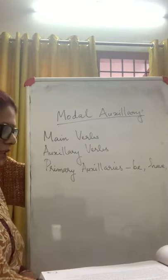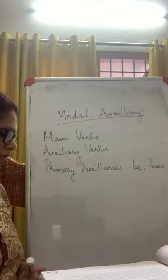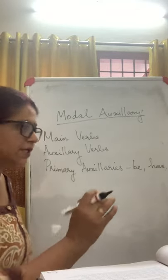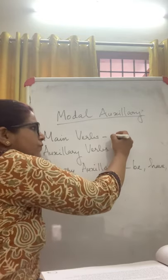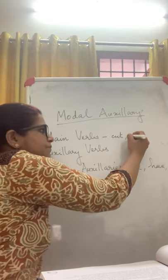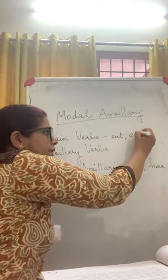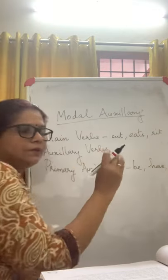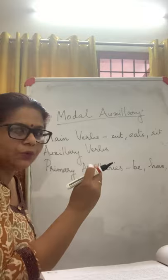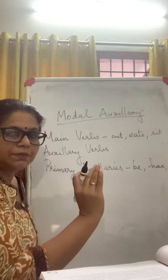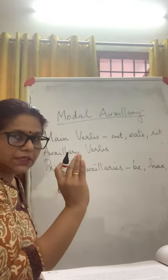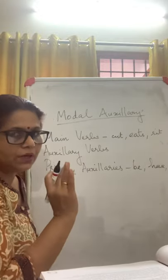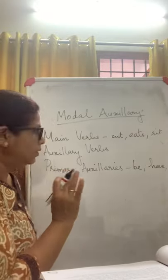A verb in its original form is called a main verb, and it can stand on its own. For example, it can be 'cut', it can be 'eats', it can be 'sit'. All these can be examples of a main verb. These verbs are capable of maintaining the sentence on their own — they can stand without any help.